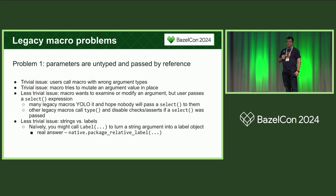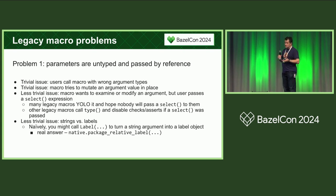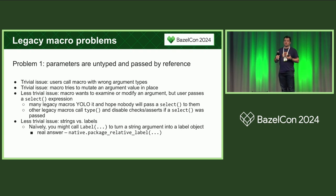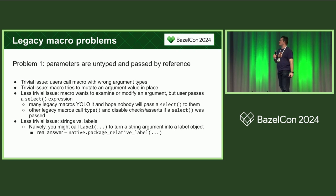What are some problems with legacy macros? Problem number one is that it's an ordinary Starlark function with untyped arguments which are passed by reference. A trivial problem: your user might try to call your macro with the wrong arguments, or you might make a mistake and accidentally try to mutate one of the arguments in place. Easy to work around — but less easy to work around is the following.